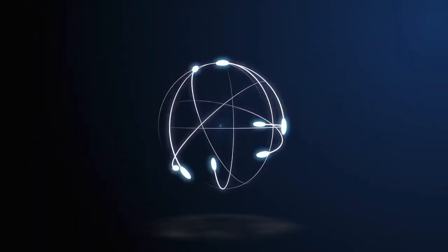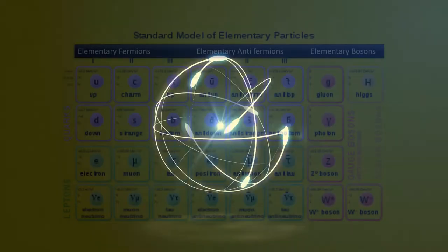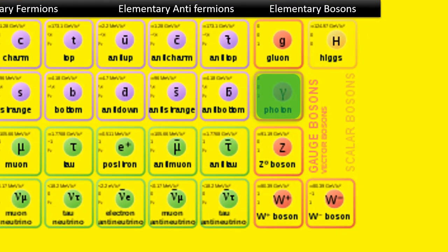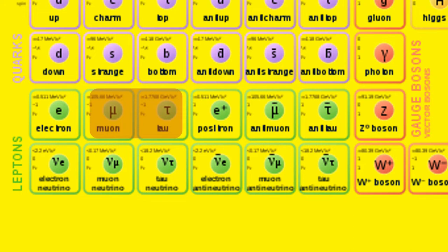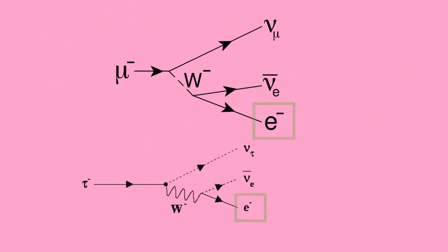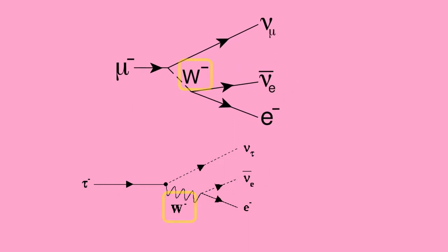Electrons are bound to the nucleus by electromagnetic force. Photons carry this force. The other electron-like particles are muons and taus, which can be produced in high-energy collisions and are highly unstable. They will rapidly decay and change to electrons, neutrinos and anti-neutrinos.